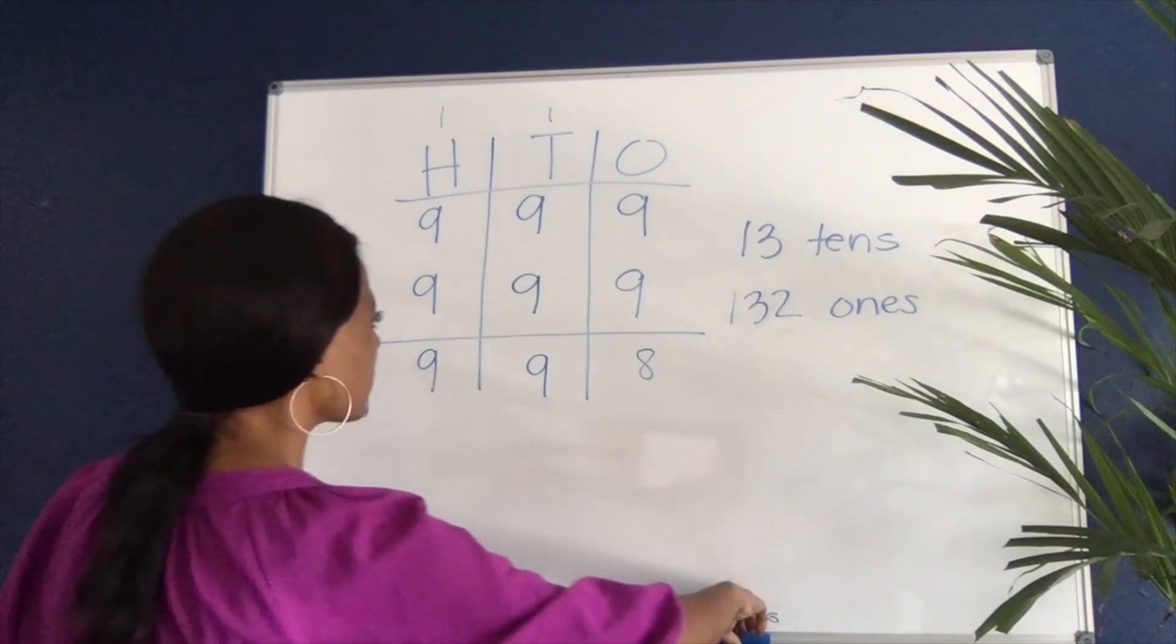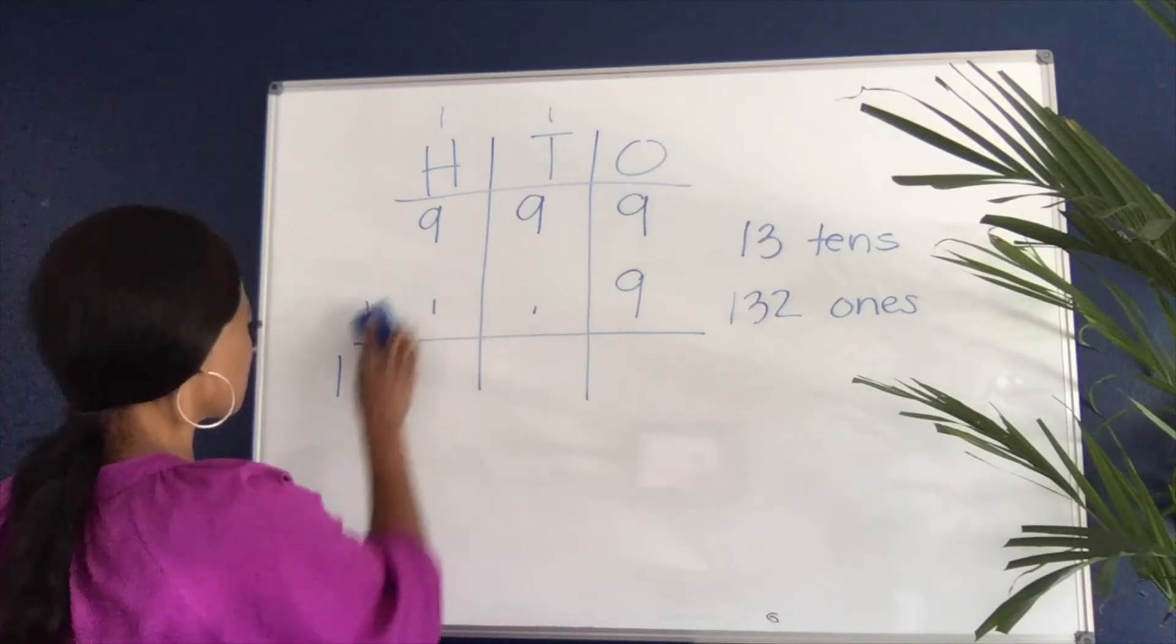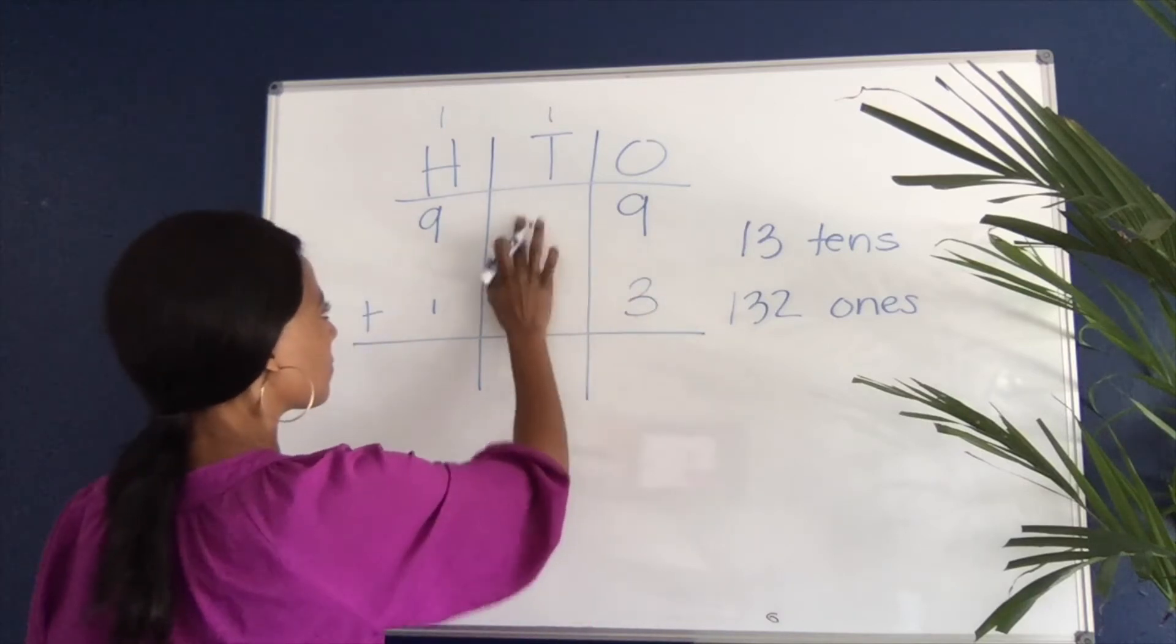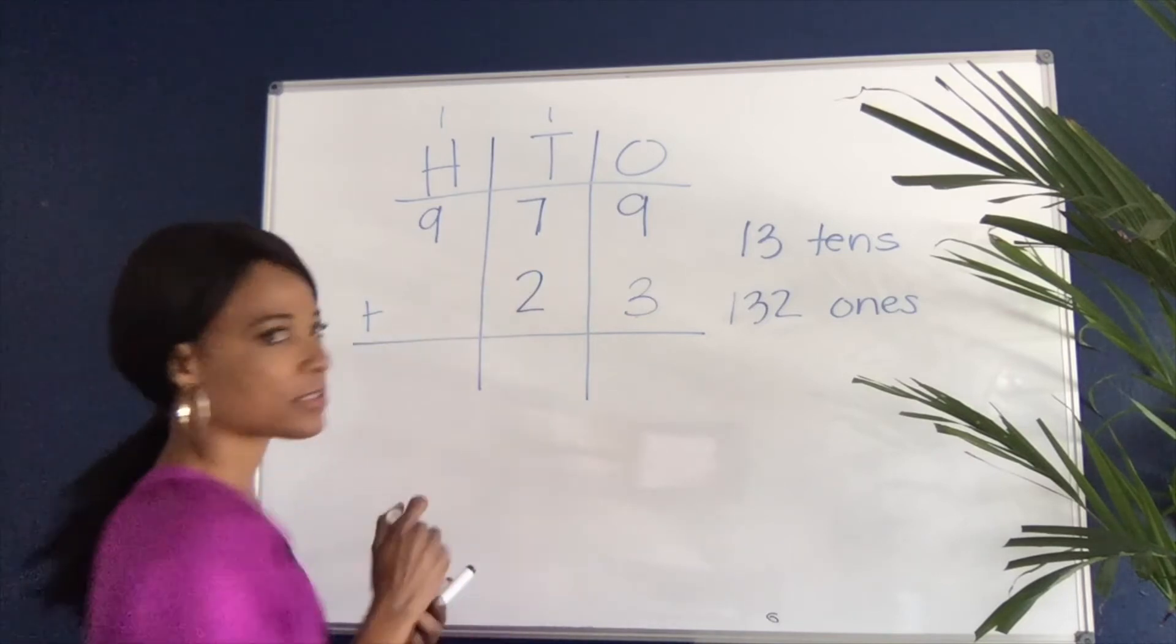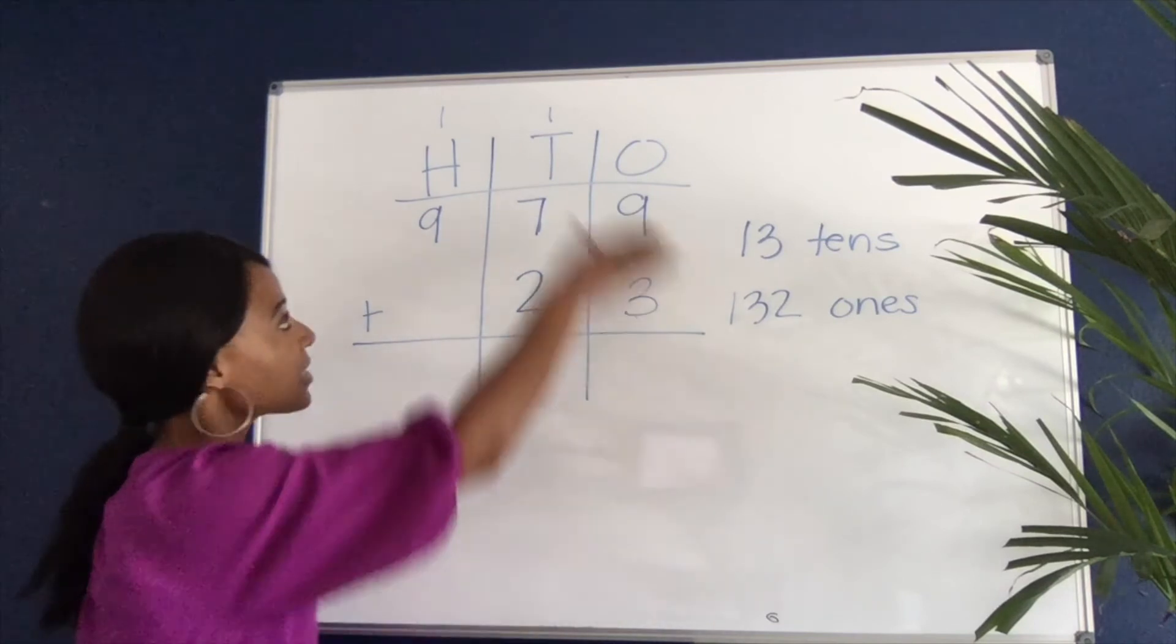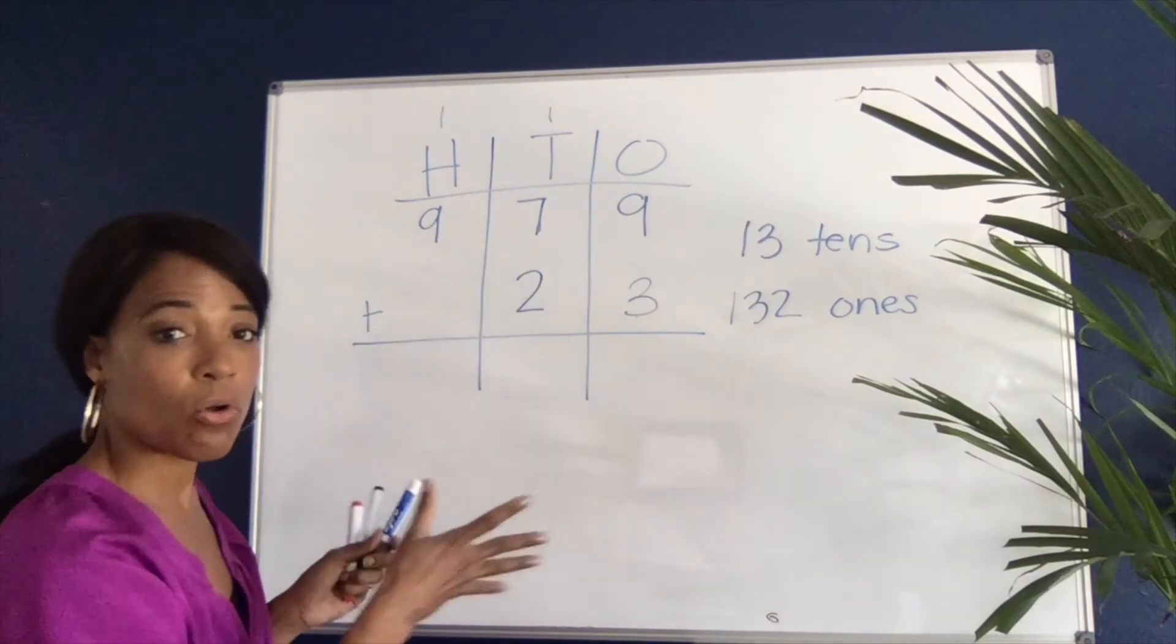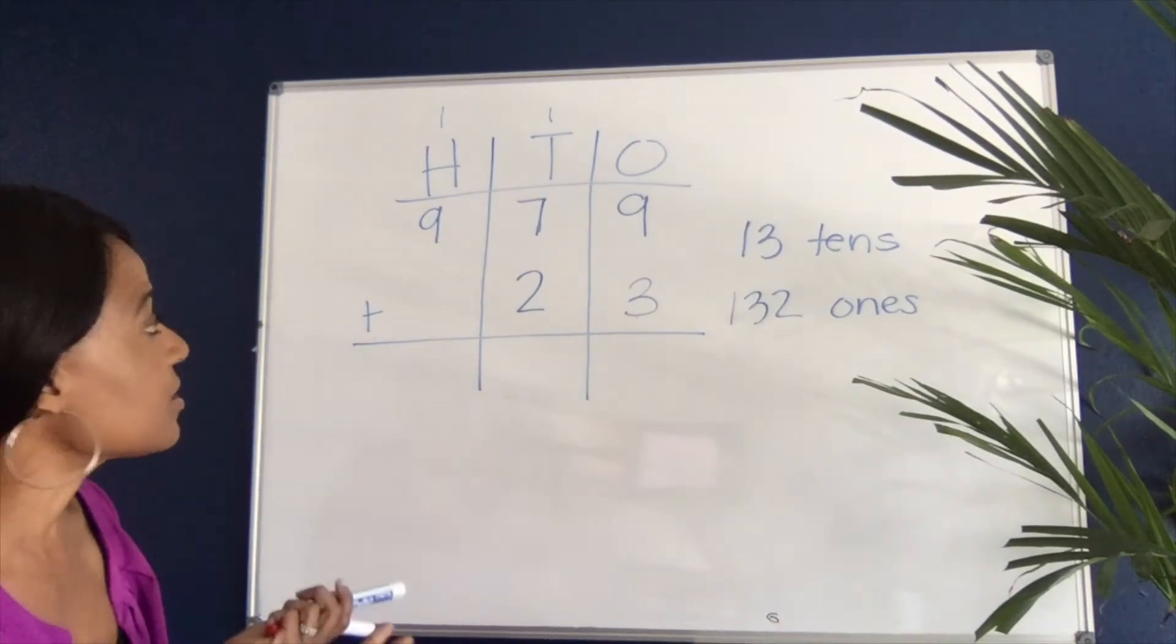Another thing that happens with this setup is that when students are looking at these numbers, they're isolating them into small compartments. They isolate them into the ones place, isolate them into the tens place, and isolate them into the hundreds place. What they don't often do is look at the whole number.